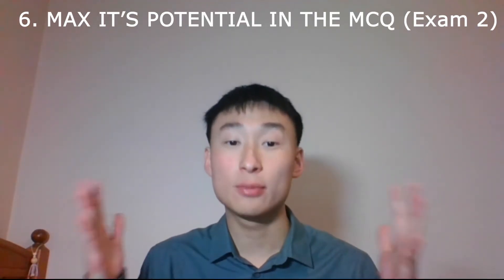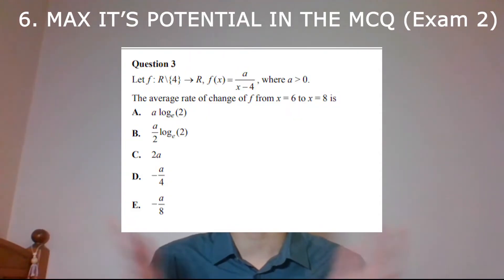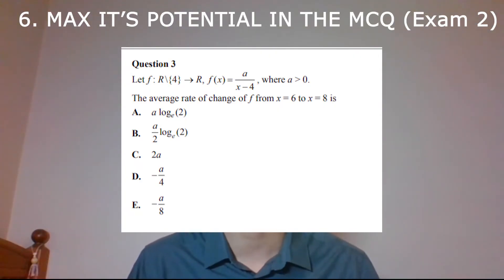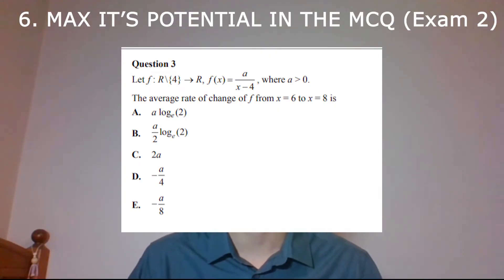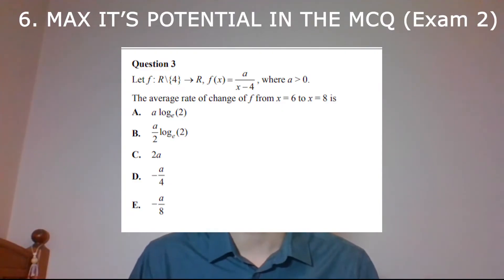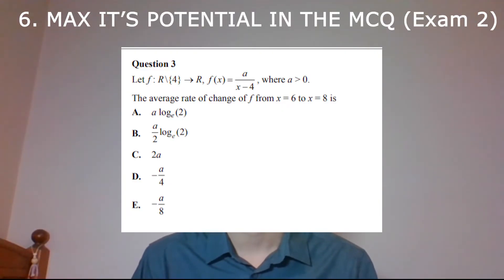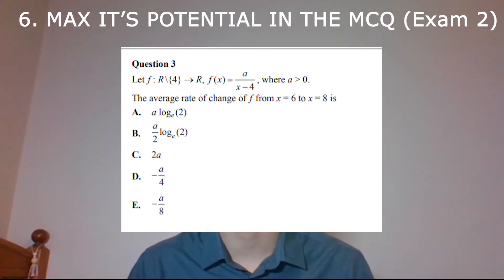For example, look at this average rate of change question — question three on the 2019 Methods exam, which was my exam. Define f(x) on your CAS, then compute f(8) minus f(6) over 8 minus 6.